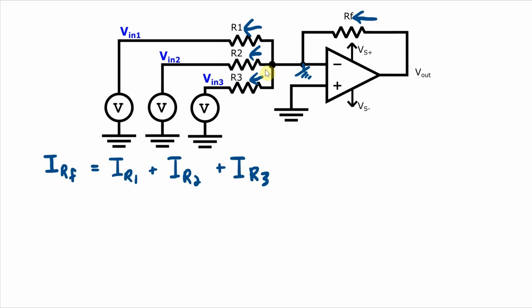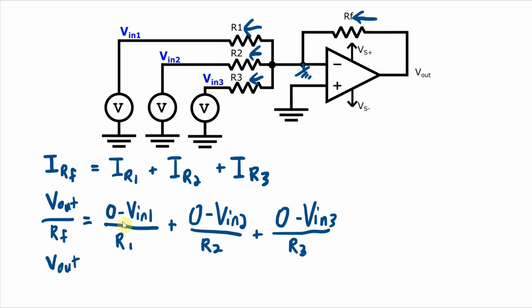And to understand the relationship between the output and the inputs, I can rewrite these currents in terms of Ohm's law. So IRF is the current through RF. The voltage across RF is Vout minus 0. So Vout over RF is that current. IR1. Well, the voltage across R1 is 0 minus VIN and that's over R1. 0 minus VIN1. And R2 is very similar. 0 minus VIN2 over R2. Now I'm going to get rid of all these zeros. And I will also take the negative sign outside of the expression. So I get VIN1 over R1, plus VIN2 over R2, plus VIN3 over R3.